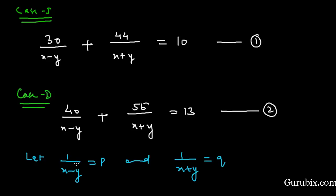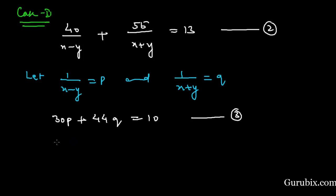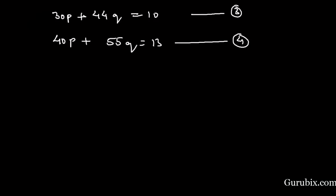We place the values of 1 over (x minus y) and 1 over (x plus y) into the two equations. Then we have: 30p plus 44q equals 10 — this is equation number 3. Similarly, 40p plus 55q equals 13 — this is equation number 4.